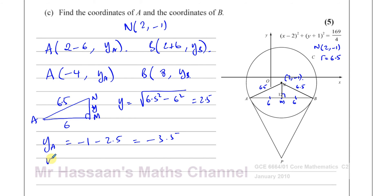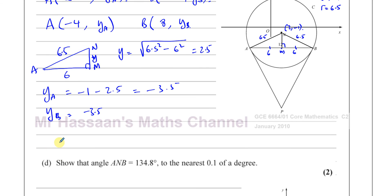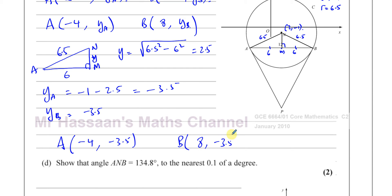That is also the y-coordinate of B, because they are both at the same depth below N. Therefore, the coordinates of A are (−4, −3.5) and the coordinates of B are (8, −3.5). Those are the coordinates of A and B.